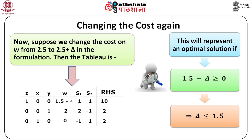Suppose we change the cost on w from 2.5 to 2.5 plus delta in the formulation. Doing the same calculations as before will result in the tableau as given. In this case, we already have a valid tableau. This will represent an optimal solution if 1.5 minus delta is greater than or equal to 0, which implies that delta is less than or equal to 1.5. As long as the objective coefficient of w is no more than 2.5 plus 1.5 equals 4 in the original formulation, our solution of x equal to 2 and y equal to 2 will remain optimal.